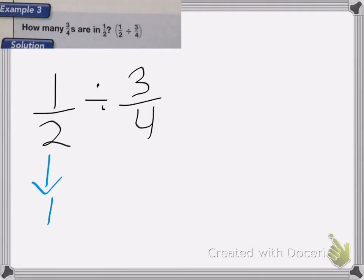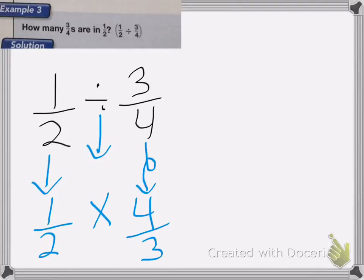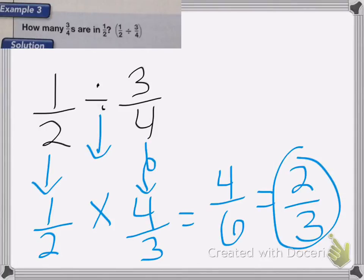So we have 1 half, we flip this number, we change this into a multiply, and this number we flip into 4 thirds. So 1 half times 4 thirds is equal to 4 sixths, which then we would reduce down to 2 thirds, and that would be my correct answer.